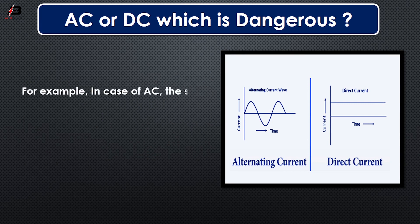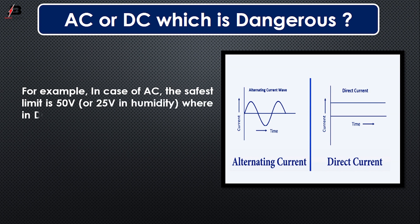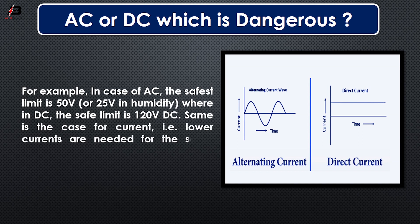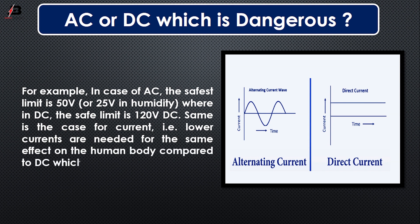For example, in the case of AC, the safest voltage limit is 25V in humidity, whereas for DC the safest limit is 120V DC. The same applies to current — lower AC currents are needed to produce the same effect on the human body compared to DC.